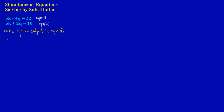Equation two states that 5K plus 2Q is equal to 10. To make Q the subject I need to isolate Q. Since 5K is being added, I do the opposite — subtraction. So: 5K minus 5K plus 2Q equals 10 minus 5K. The 5K terms cancel, leaving 2Q equals 10 minus 5K.